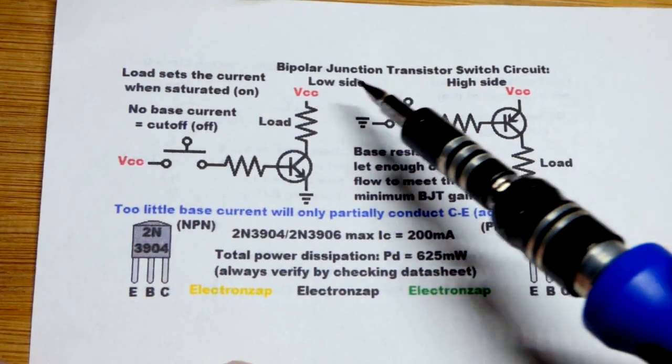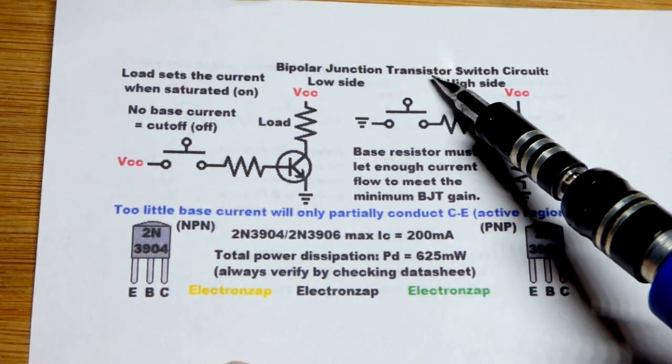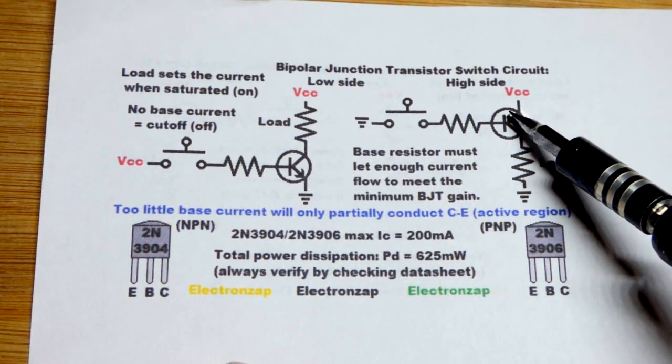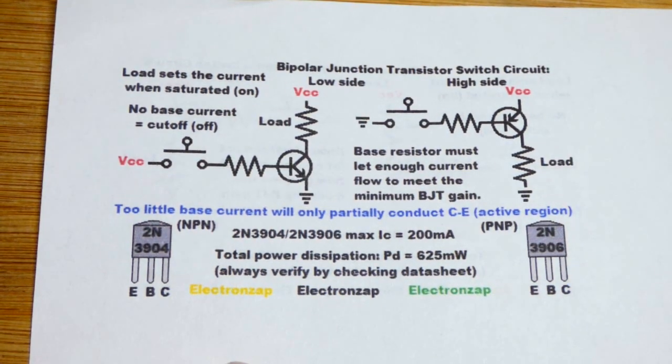In this video we're going to look at the bipolar junction transistor wired as a switch. We have the NPN version here and the PNP version over there.